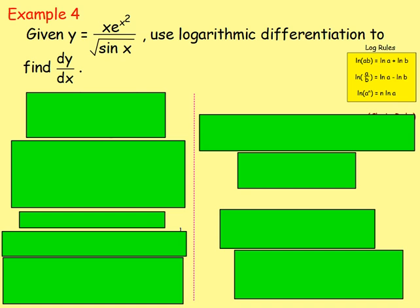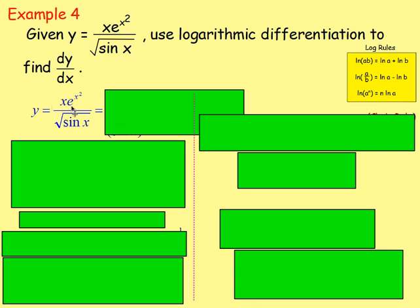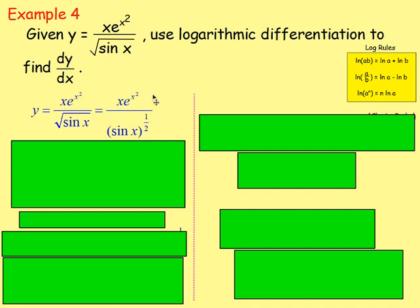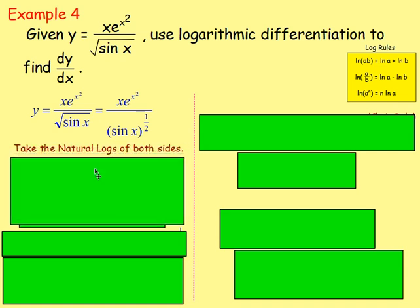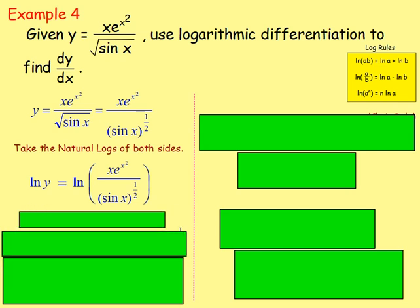Example four: given y = x·e^(x²) / √(sin x), use logarithmic differentiation to find dy/dx. First, rewrite the square root as a fractional index: √(sin x) = (sin x)^(1/2). So the function is x·e^(x²) / (sin x)^(1/2). Take the natural logs of both sides: ln(y) = ln[x·e^(x²) / (sin x)^(1/2)].